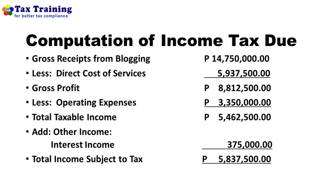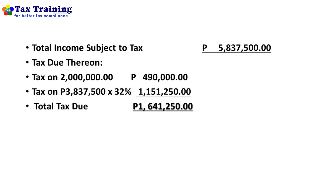The interest income is presumed not subjected to final tax; otherwise it would not be taxable in the ordinary computation. The income tax on total income of five million eight hundred thirty-seven thousand five hundred is computed as follows: tax on two million four hundred ninety thousand, plus tax on three million eight hundred thirty-seven thousand five hundred multiplied by thirty-two percent equals one million one hundred fifty-one thousand two hundred fifty. The total tax due is one million six hundred forty-one thousand two hundred fifty pesos — this is the income tax the blogger must pay.